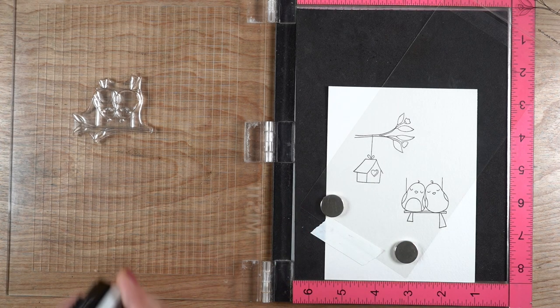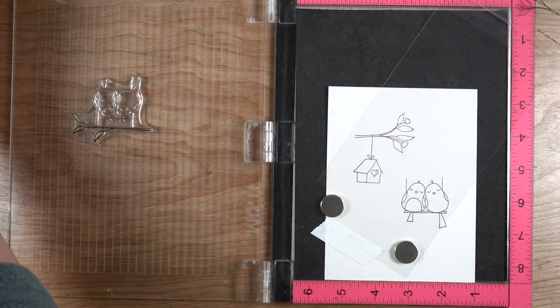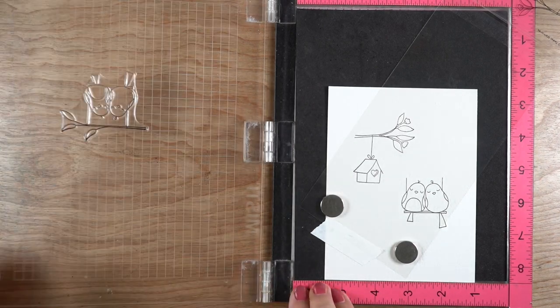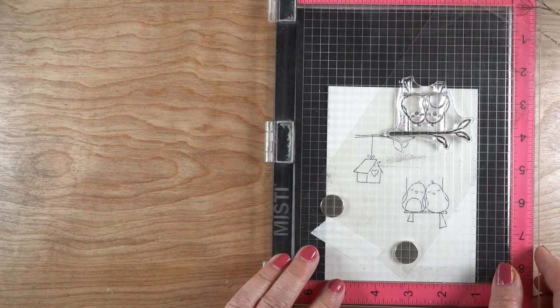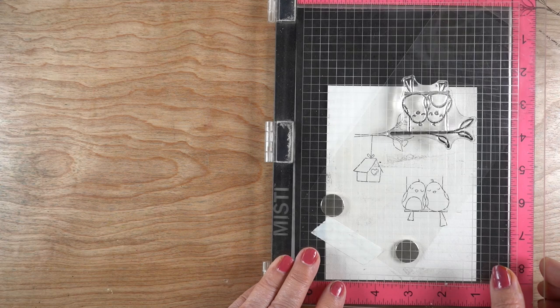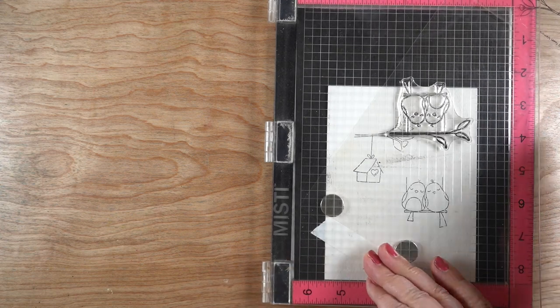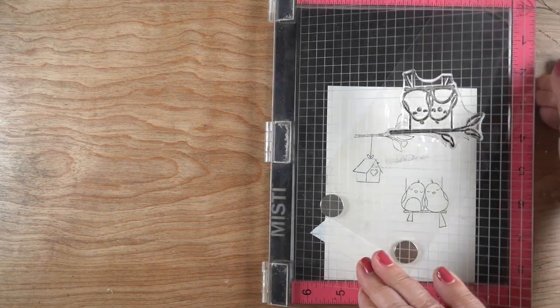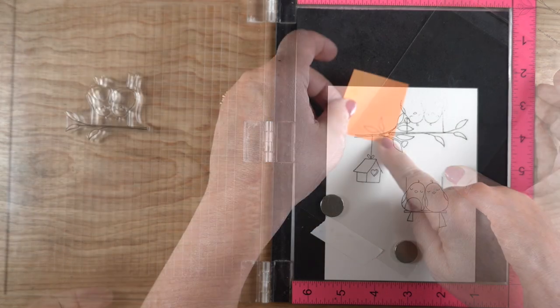Taped it down in place so I could turn the stamp upside down and then stamp this section and then use that to figure out where to put my sticky notes for my masking. So you do make sure that you've taped it down because magnets are generally not enough to hold this in place when you're trying to do delicate placement of your sticky notes.